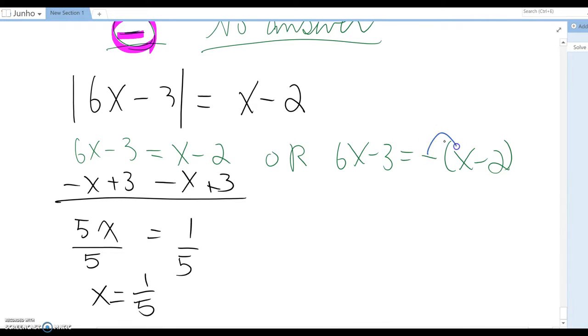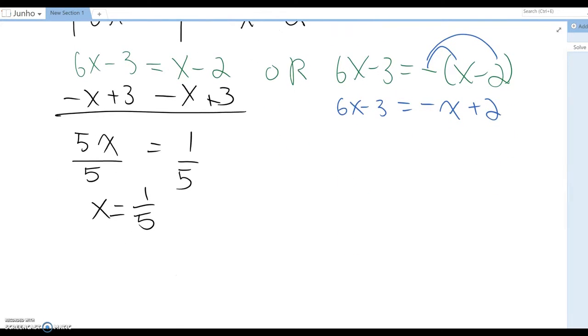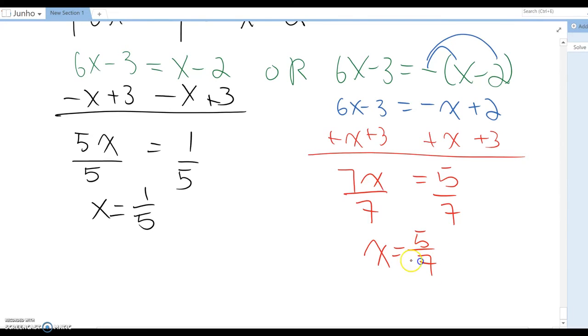Or now distribute, then 6x - 3 = -x + 2. So from here you combine x at the same time, combine 3 both sides, then 7x = 5, and divide by 7, then x = 5/7. So those two answers.